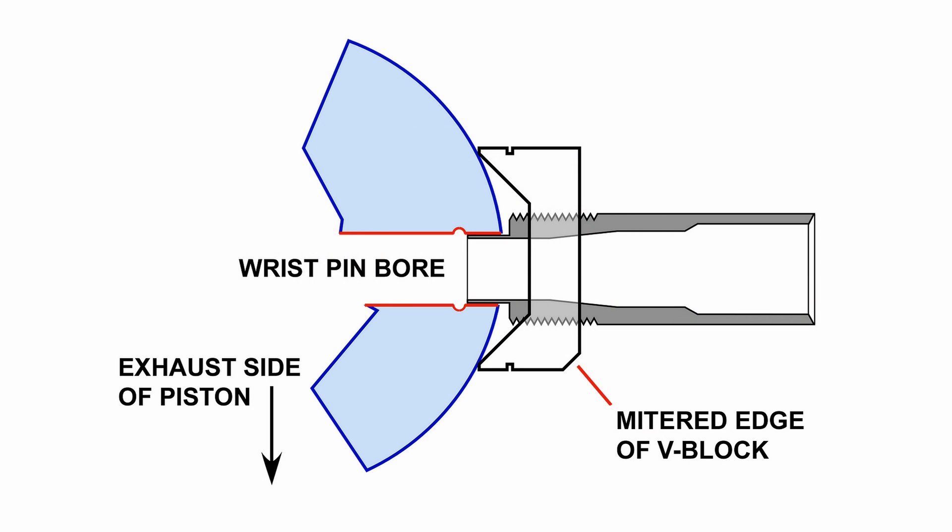If you have the mitered edge of the block pointing towards the exhaust side of the piston, both sides of the V should be in contact with the piston, but that's not essential provided you use the same setup when inserting the sleeve for the second C-clip.